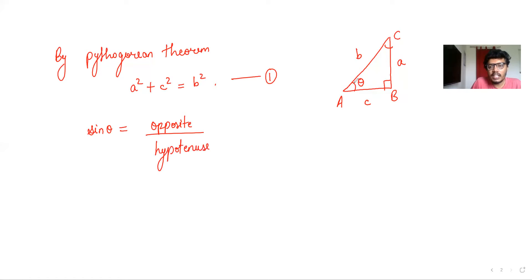Now the opposite side to the angle θ is a, and the hypotenuse is b.